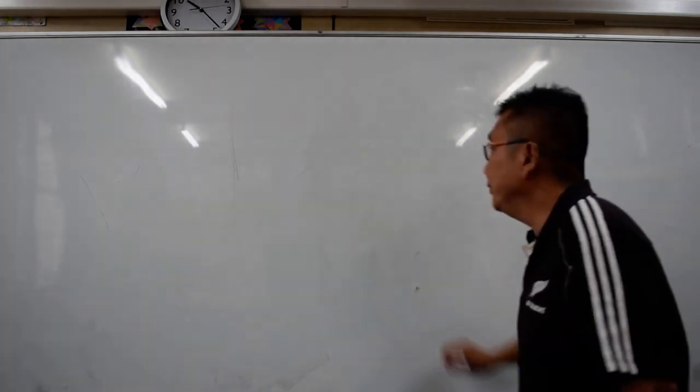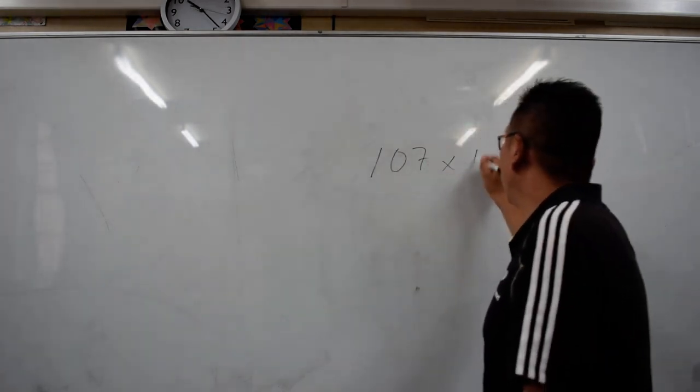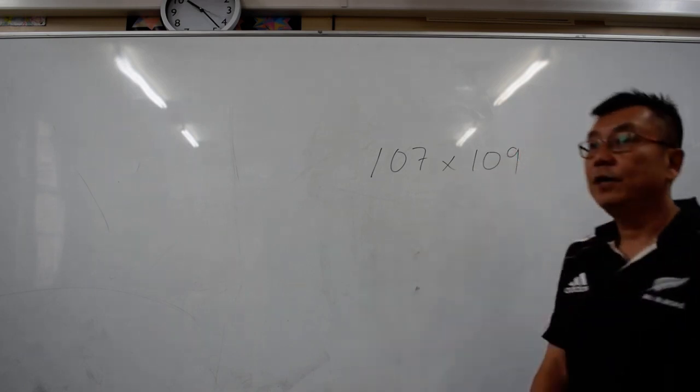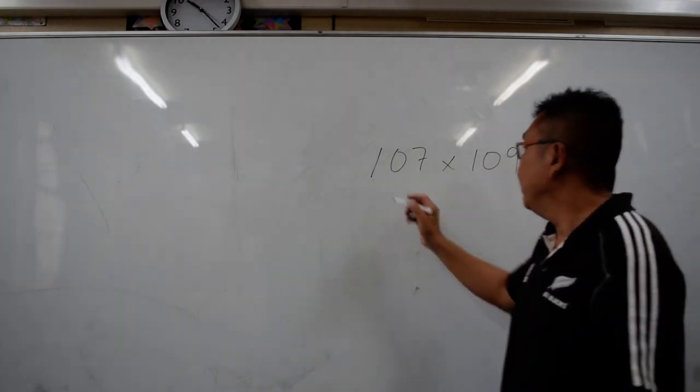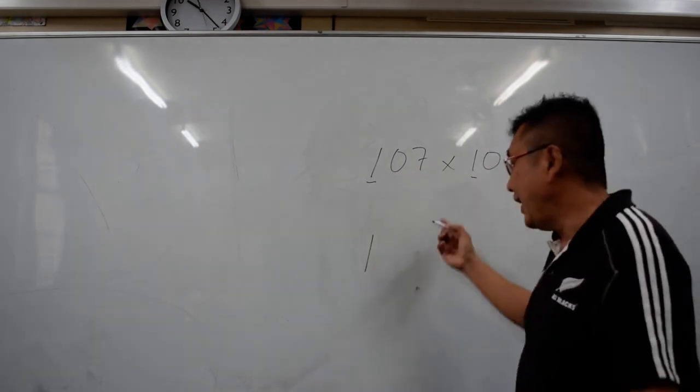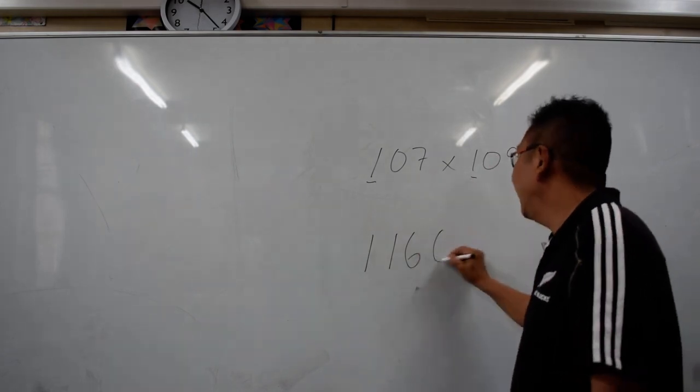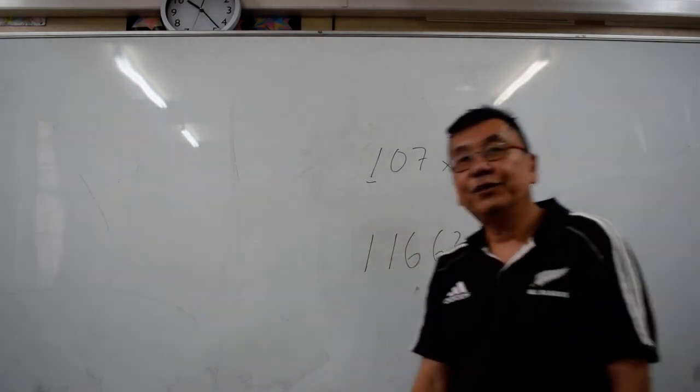Last but not least, I am going to show you a 3 digit multiplication. 107 times 109. What I do is that, very simple. The first 1 and 1 is going to be 1. And then you add 7 and 9, you are going to add them up. It is 60. And then 7 times 9 is 63. That is all you do.